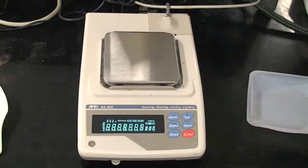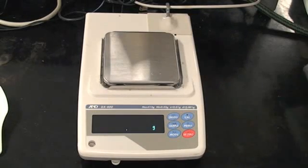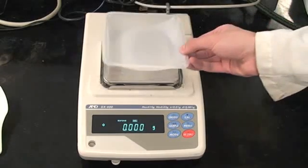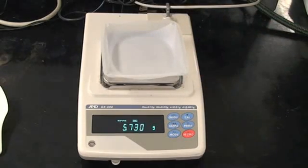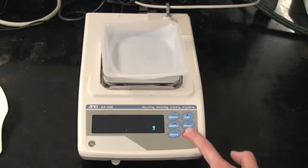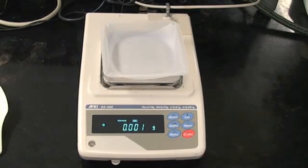In order to measure out the proper quantities of ingredients, we'll use a scale. Once the scale is turned on, place a clean whey tray on top. Naturally, the tray has its own mass. Press the zero button to remove this mass from the measurement.